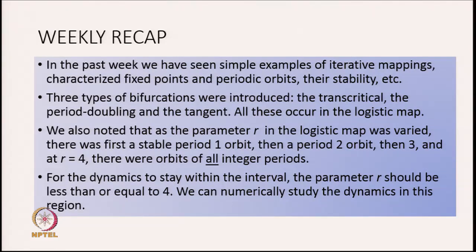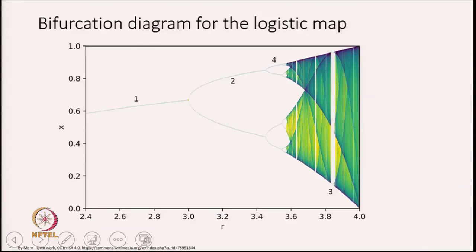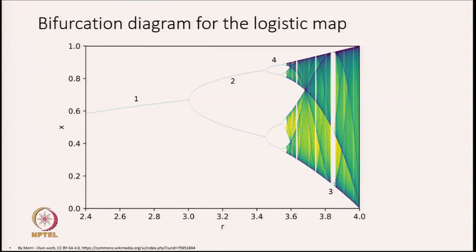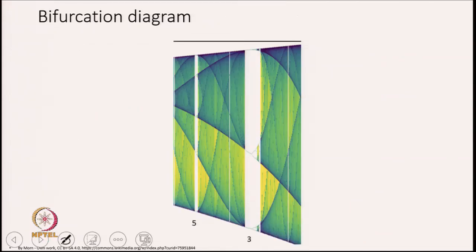We can look at the dynamics of this system numerically. Here is a bifurcation diagram for the logistic map — as you vary the parameter r, what are the different orbits that are seen? We notice that up till r equals 3 we see a period 1 orbit. At 3 there is the period doubling bifurcation, then a period 2 orbit, then period 4, period 8, and so on. Around this point we notice a period 3 orbit.